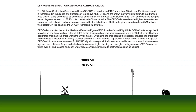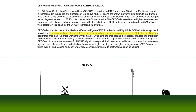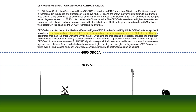How is the OROCA calculated? It's done very similarly to the MEF, only instead of just the 100-foot buffer for vertical error, we add an additional 1,000 feet in non-mountainous terrain and 2,000 feet in mountainous terrain, to accommodate the IFR requirement that a minimum altitude provide this obstacle protection. So adding 1,000 to the MEF gives us the OROCA of 4,000 MSL.